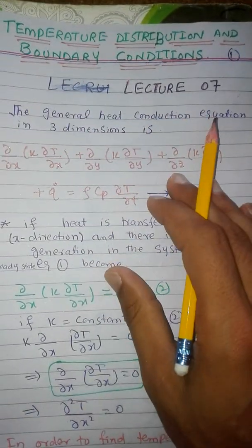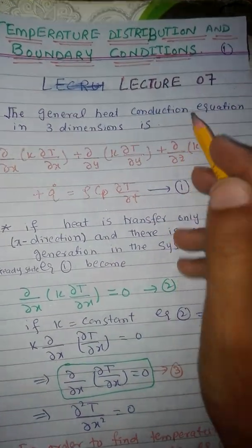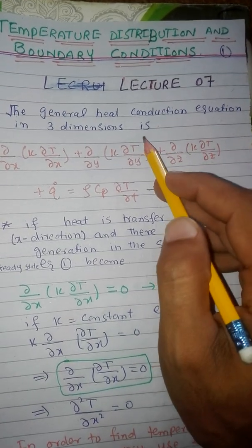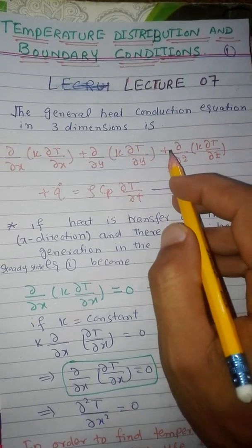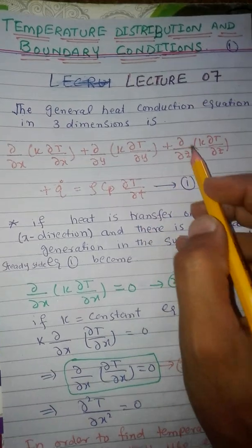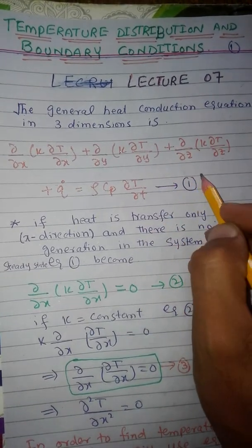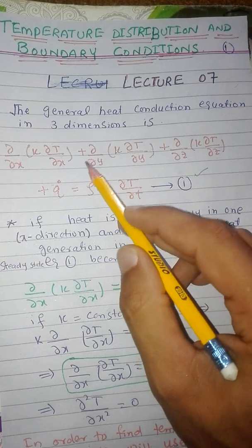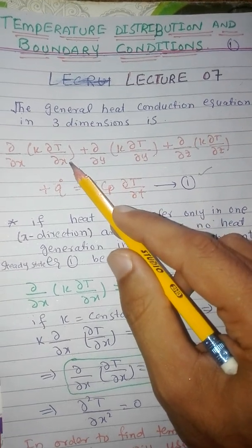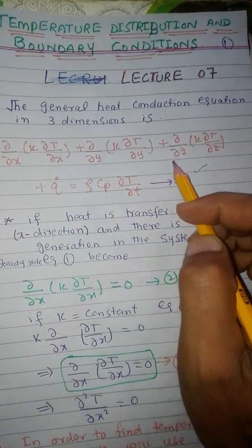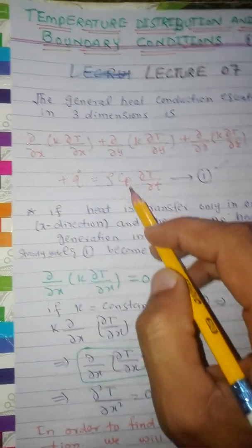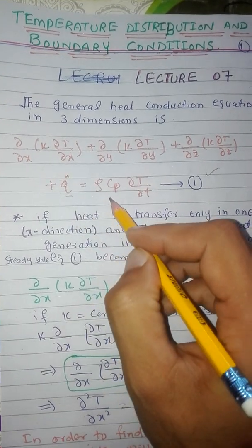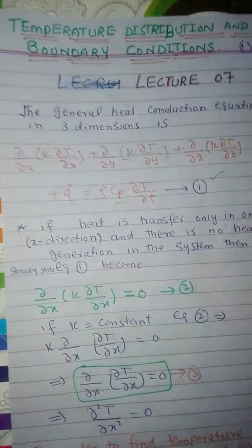As we have already discussed the general heat conduction equation in lecture 6, which is given in three dimensions — in the x direction, y direction, and z direction. This term represents the heat generation rate and this term represents the heat storage rate.